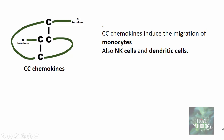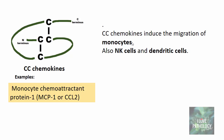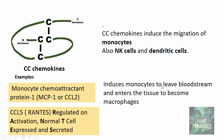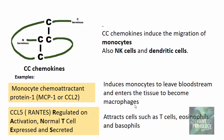CC chemokines induce the migration of monocytes and can also induce migration of natural killer cells and dendritic cells. Examples of CC chemokines include monocyte chemoattractant protein, which as the name suggests induces migration of monocytes — causing monocytes to leave the bloodstream and enter tissue to become macrophages — and CCL5, also referred to as Rantes, which attracts T cells, eosinophils, and basophils.